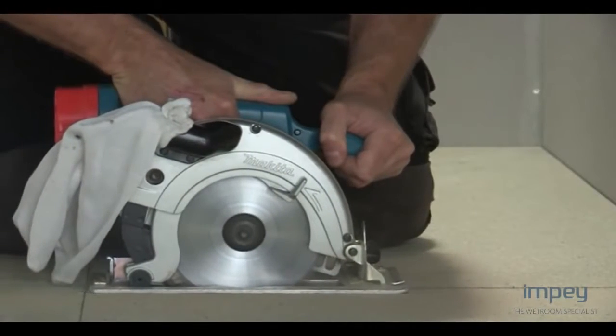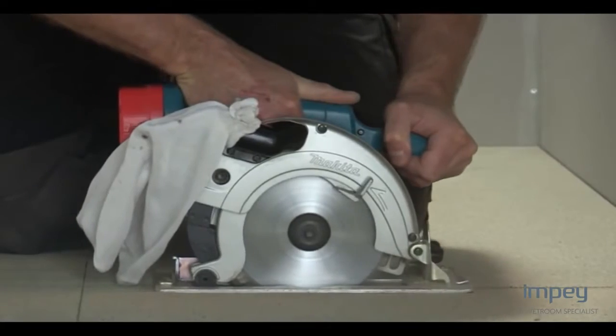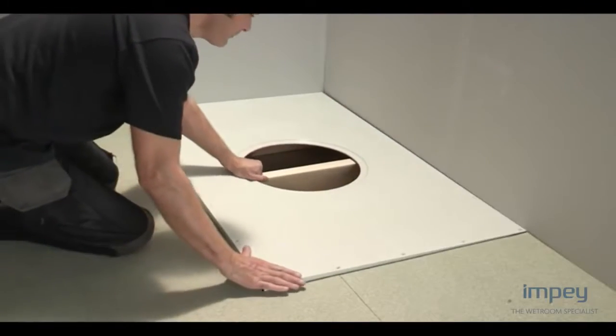Cut along the line you have drawn using a circular saw set to the depth of the floorboards and place the EasyFit deck into the aperture to check for fit.